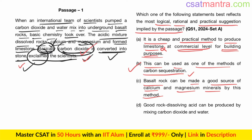Option C: 'Basalt rock can be made a good source of calcium and magnesium minerals by this method.' The purpose of this experiment is to convert carbon dioxide into another form — not to produce calcium and magnesium minerals. Also, the acidic mixture dissolved the calcium and magnesium already present in the basalt rock to form limestone, so saying basalt rock becomes a good source of these minerals is the opposite of what happened. Option C is wrong.